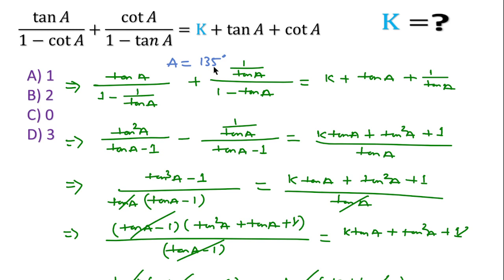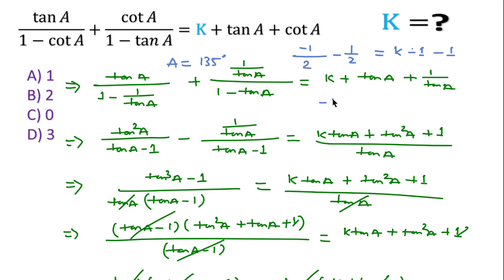If we put 135 in place of A, then tan 135 equals minus 1 and cot 135 also equals minus 1. After substituting 135, that gives minus 1, and this minus becomes plus 1, that is 2. Similarly here minus 1 over 2, and k plus this becomes minus 1 and this is also minus 1. So this becomes minus 1 and here k minus 2, giving k equal to 1. So option A is the correct answer for this question.